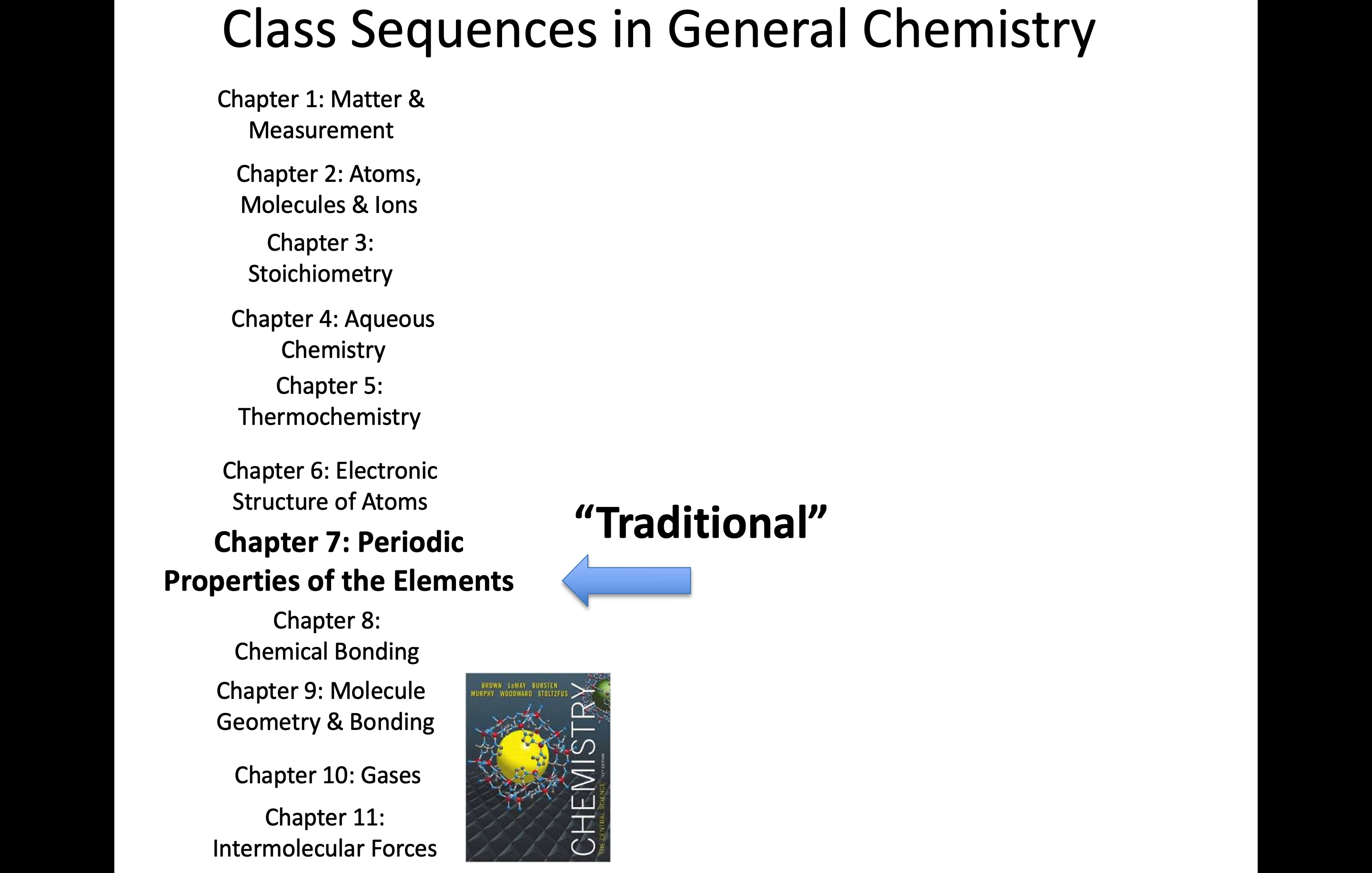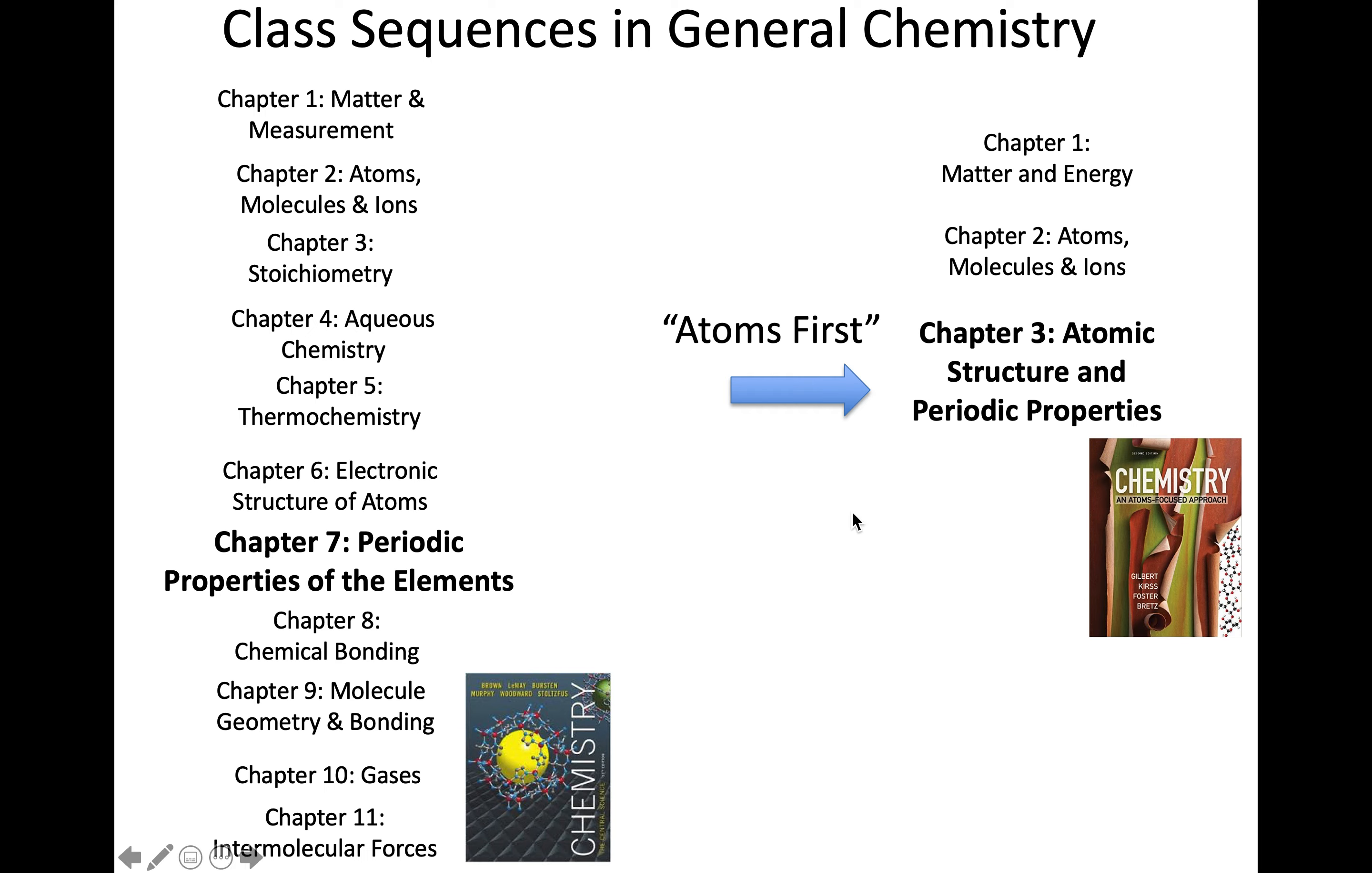In my course, it's a traditional progression where chapter 7, looking at periodic properties of the elements, is about halfway to two-thirds through the course. The same topic could appear earlier in an atoms-first course. When I look at its treatment in different textbooks, it's largely the same.